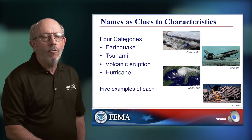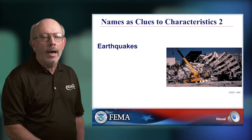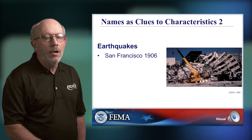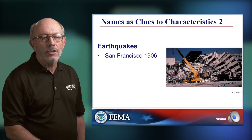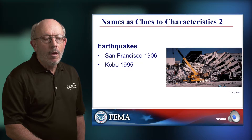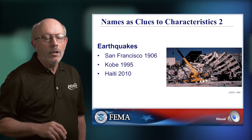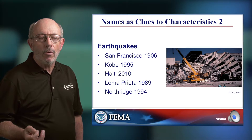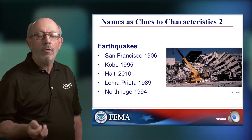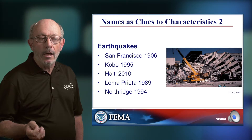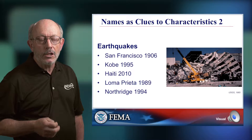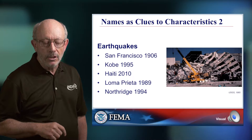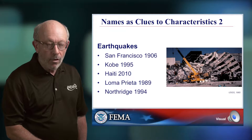As an example, earthquake names are two parts — double-barreled in every case. There's a location and there's a date. But when we look at it in detail, those locations are not the epicenter of the earthquake. They're not where the earthquake is; they're where the people are. So the geographical connotation of earthquakes is the human connotation, not the connotation of the location.